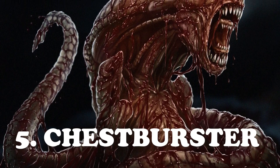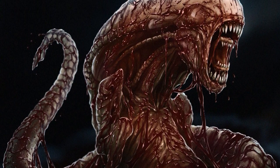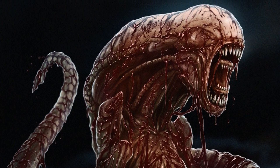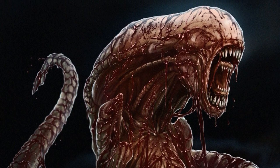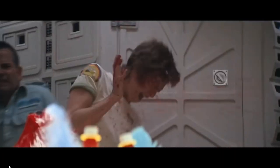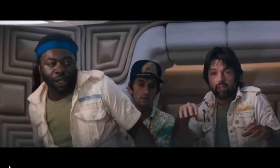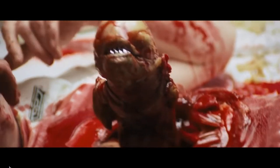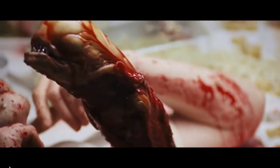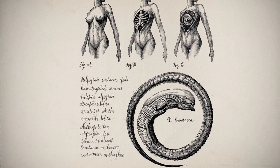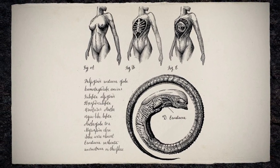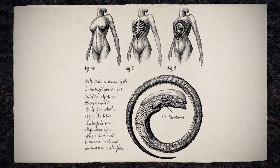Chestburster. Seen in the movie Alien, this is an infant form of the xenomorph species. As the name suggests, this alien grows inside a host and bursts out from their chest, killing them gruesomely by biting through the ribcage. When they leave the host, it sheds its light-colored skin, then in just a few hours, it develops into an adult xenomorph.